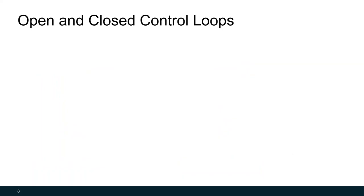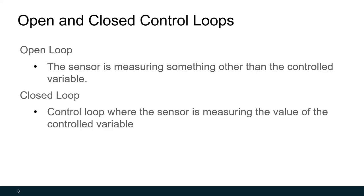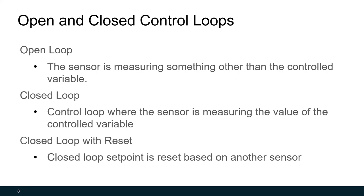There are two main types of control loops: an open loop and a closed loop. In an open loop, the sensor is measuring something other than the controlled variable. In a closed loop, the sensor is measuring the controlled variable directly. We can actually combine these to make a loop called a closed loop with reset, where the closed loop set point is reset based on another sensor.